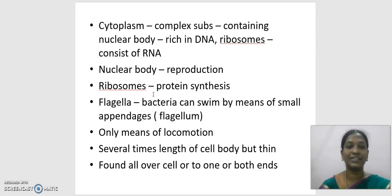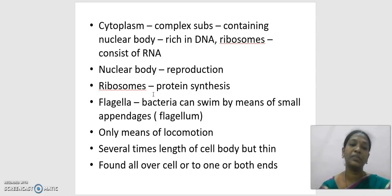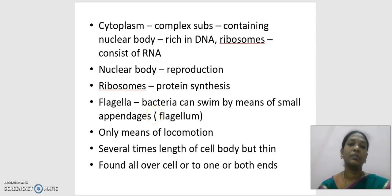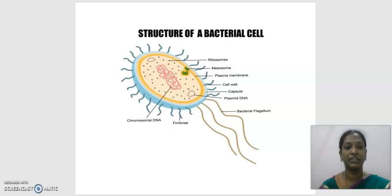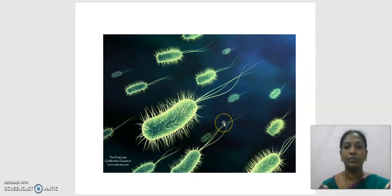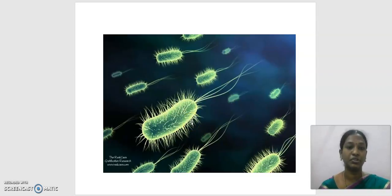Another part is the flagella, which is the only means of locomotion for bacteria — allowing them to move from one place to another by swimming. The flagella are small appendages present surrounding the whole body or at both ends of the cell. In the microscopic view, we can see the cell wall, cytoplasmic membrane, and flagella surrounding the body or at one end, helping the bacteria move.